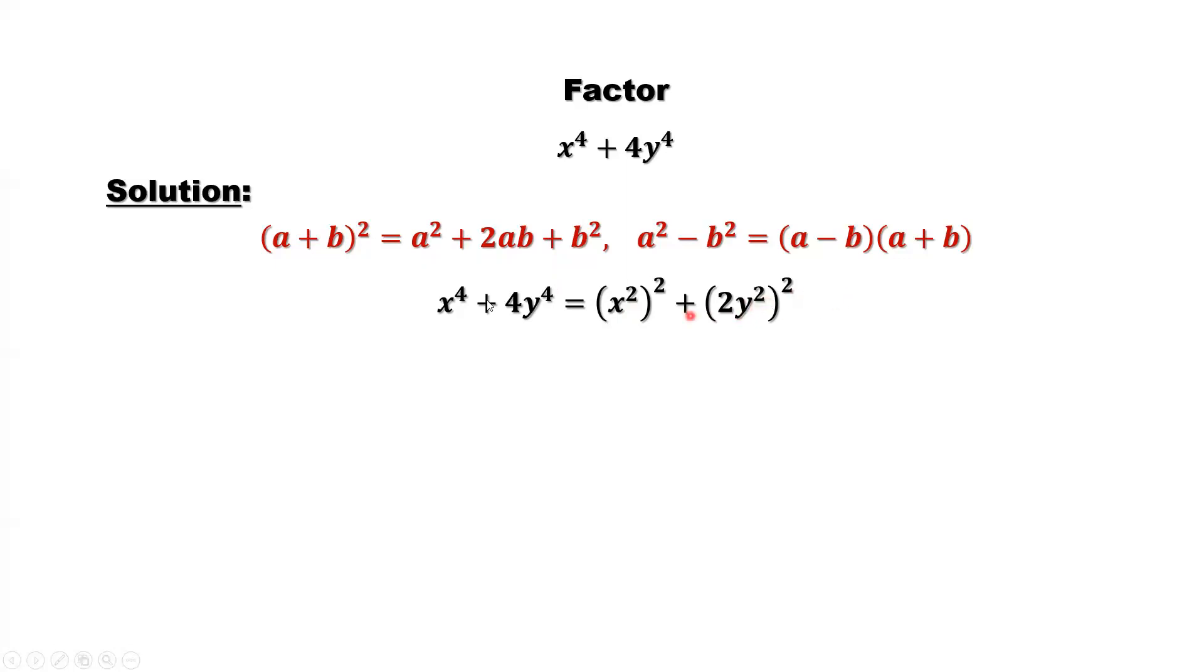If we have here, we can factor this. If we don't have, you want it, we can do this. Add one, subtract one to make the balance. Add one here. You need a 2ab. Here's minus 2ab. Here's 2 and a 2. We can simplify. That's 4x^2y^2.